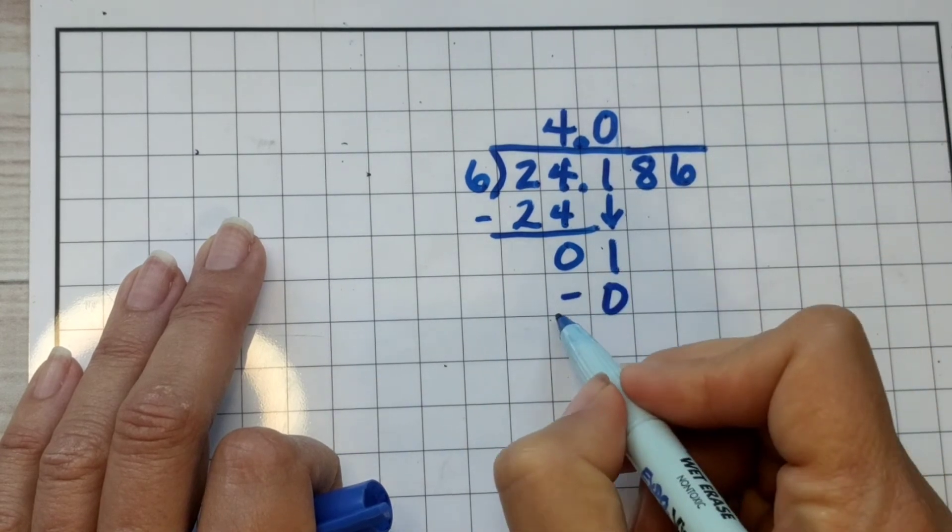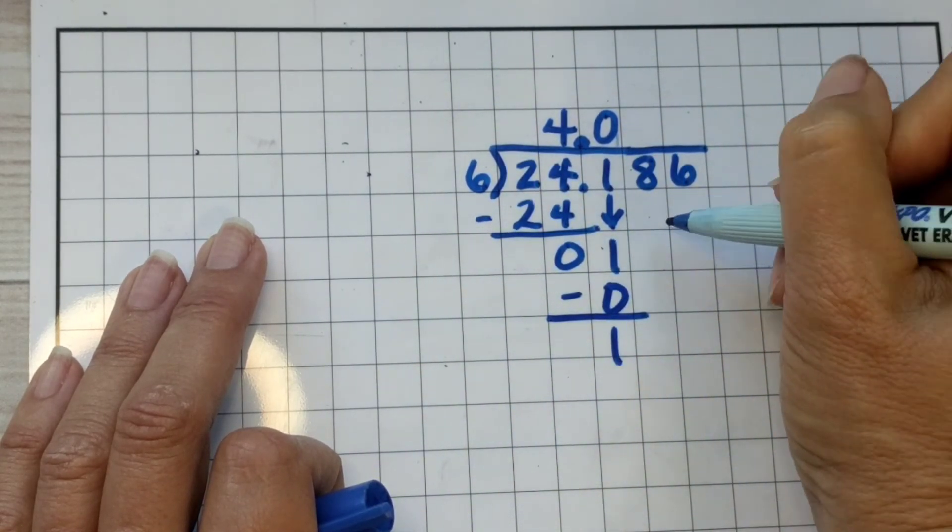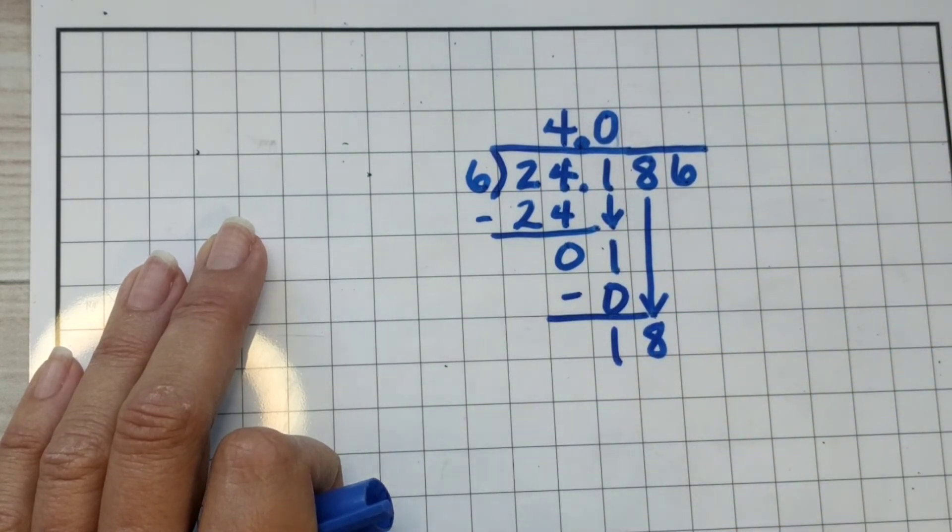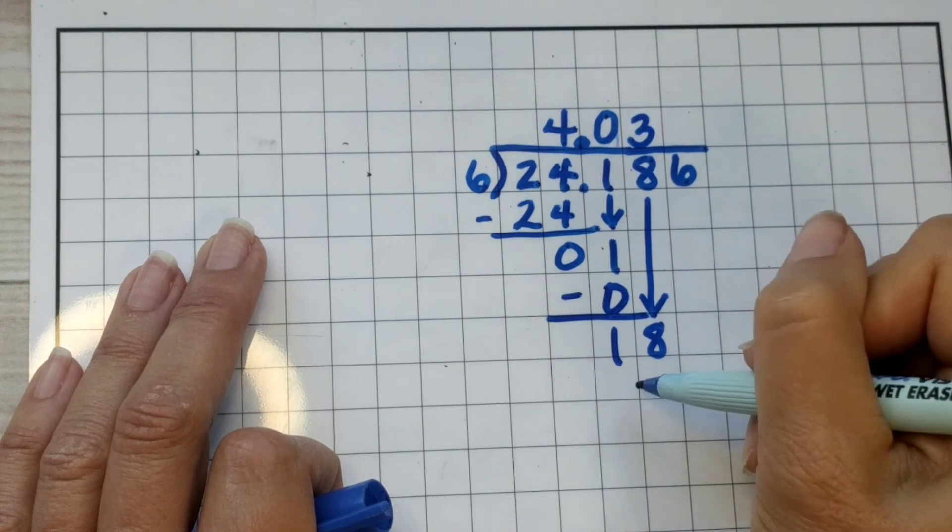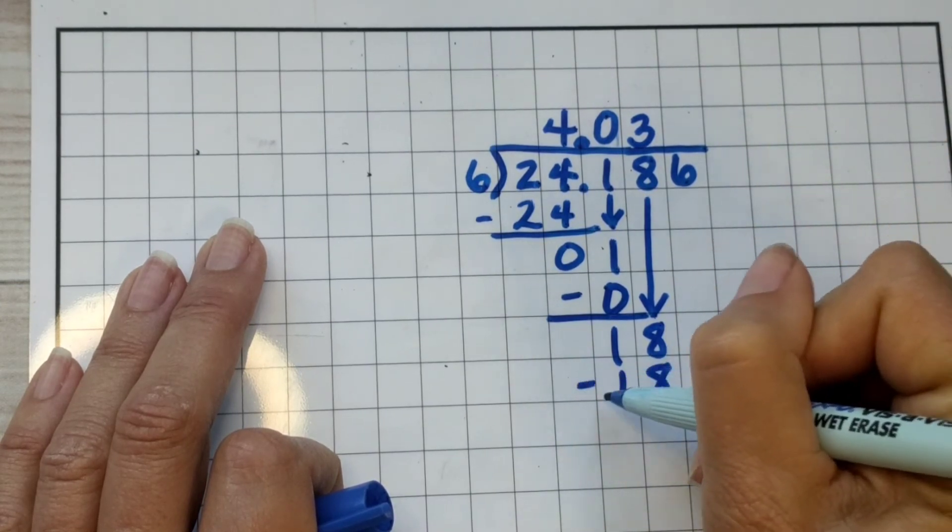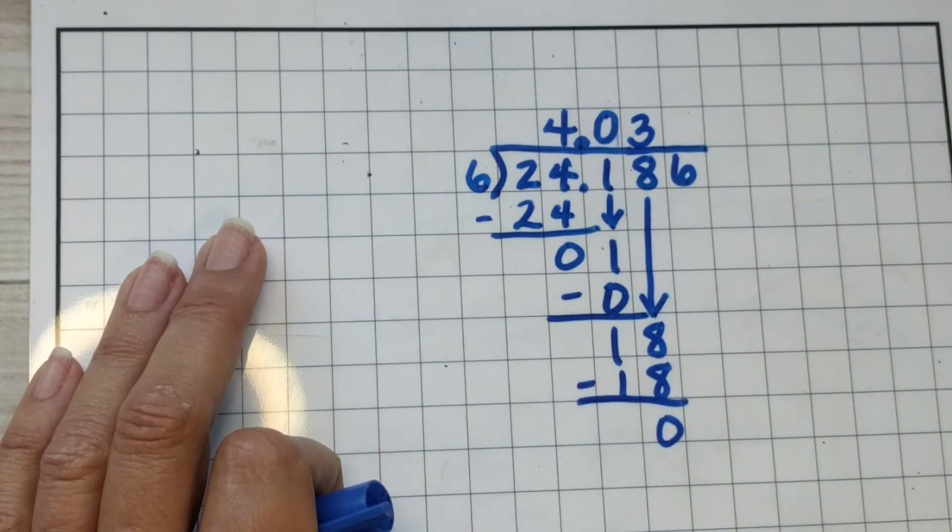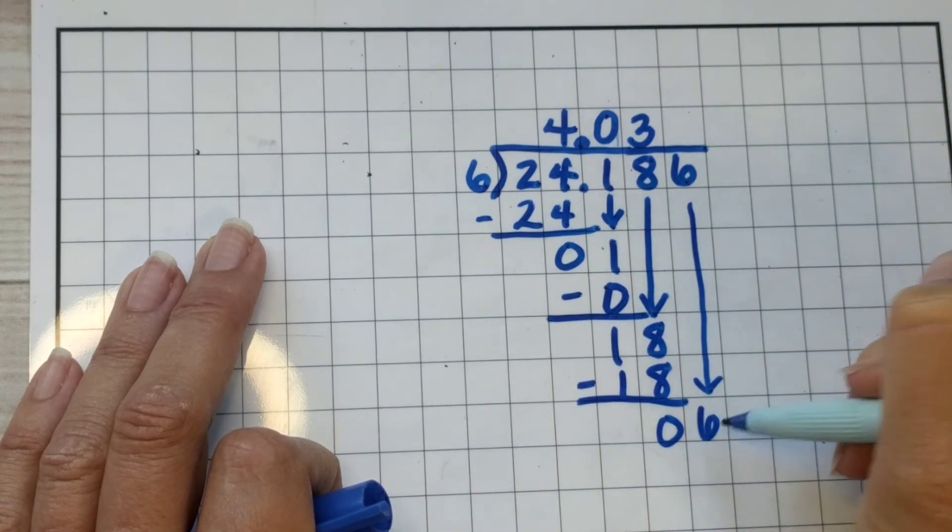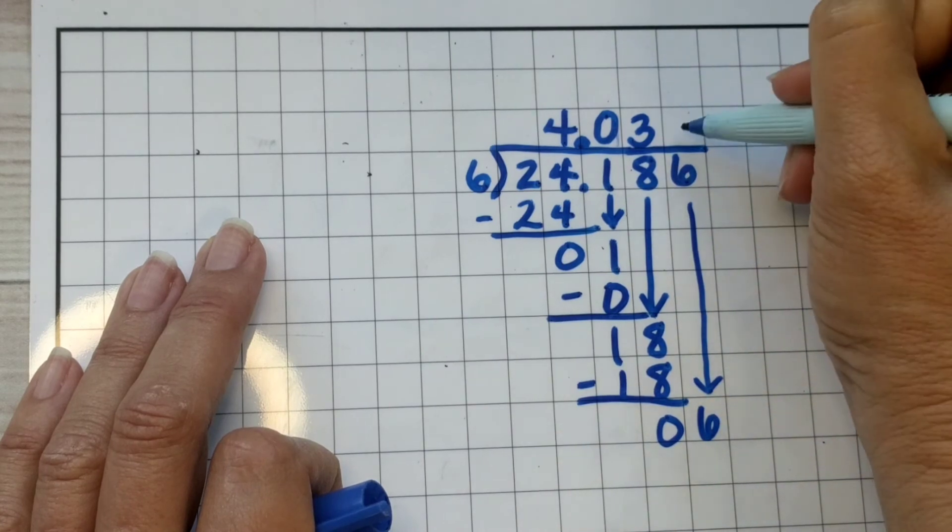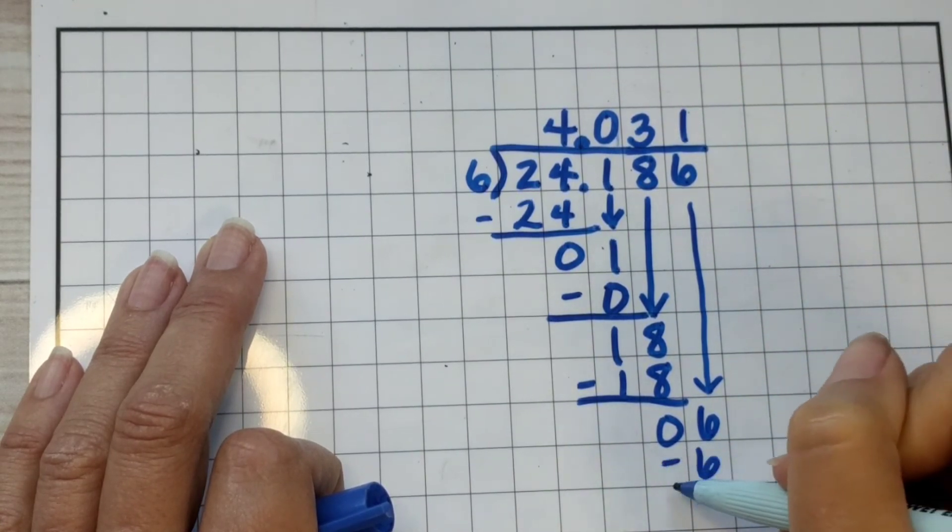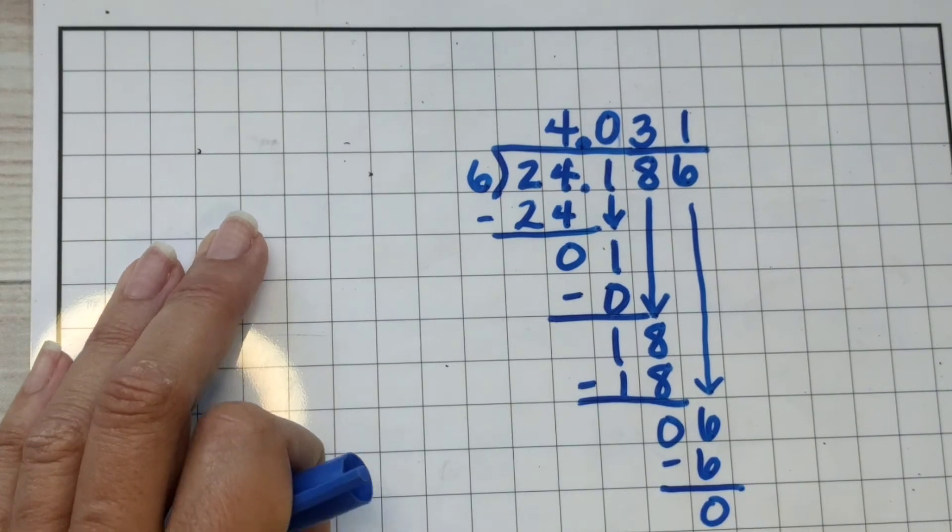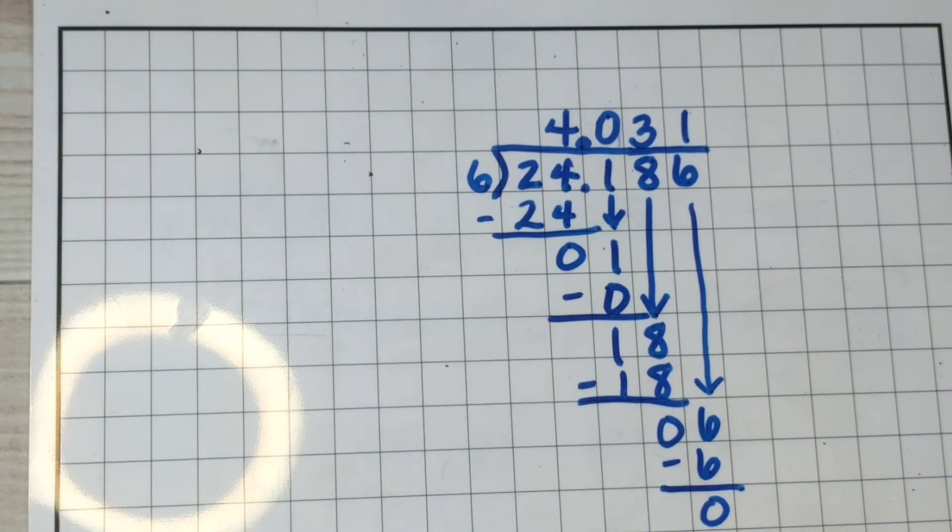We're going to subtract that zero because six times zero is zero. Subtract the one. Bring down the eight. Six goes into eighteen three times. Nice and tidy. So, now I need to bring down the six. Six goes into six one time. And that is my final answer. So, notice that graph paper helps us stay organized with our decimals. It's really a good resource to use when you're doing your math.